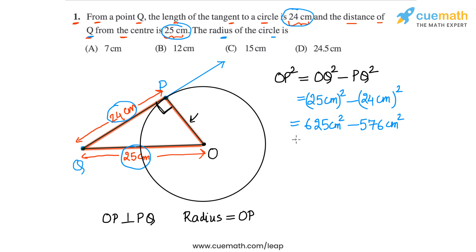And then 625 minus 576 is 49, so we get 49 centimeter square. And now we just take the square roots, so we get OP equal to root of 49 which is 7. So OP is equal to 7 centimeters.